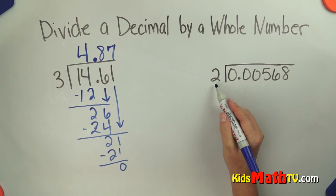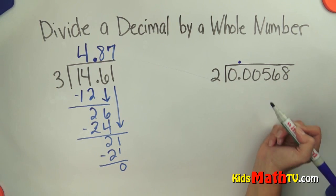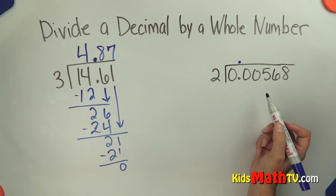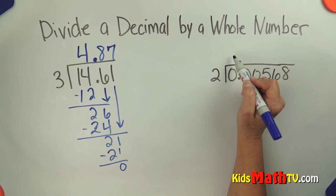We have no decimal in our divisor, so we simply bring the decimal point straight up to our answer. How many twos are in zero? Well since there's a decimal place here I'm going to go ahead and write the zero.